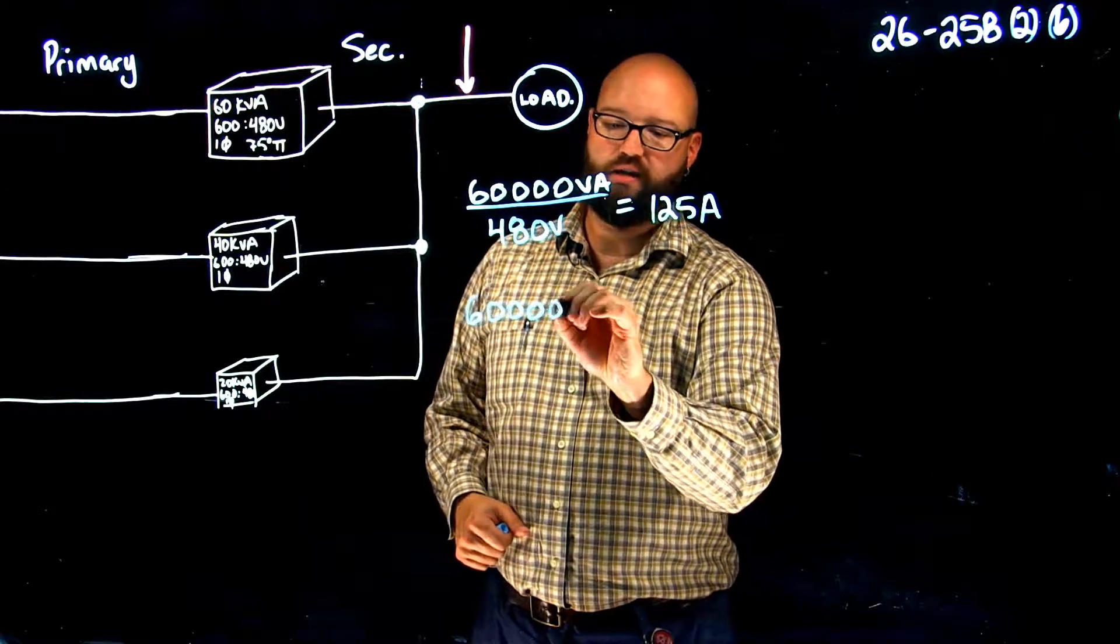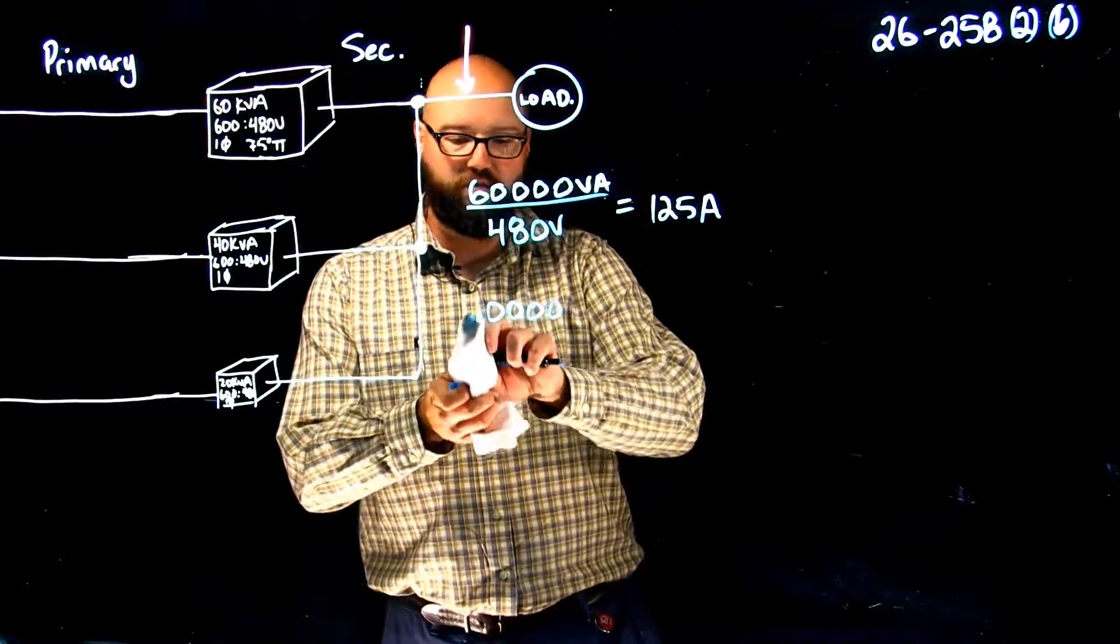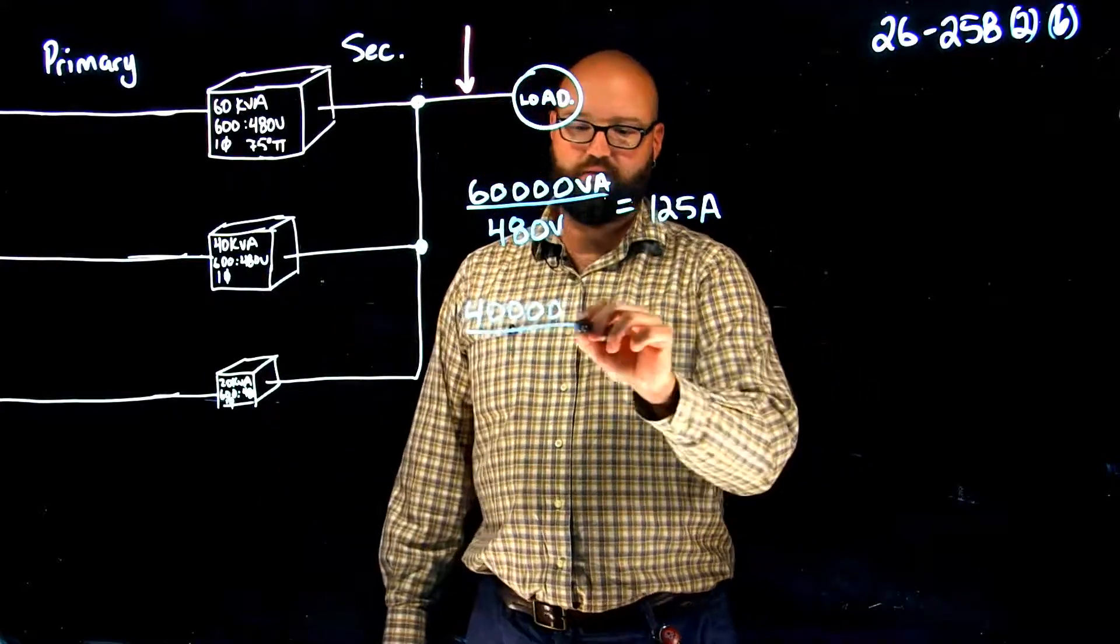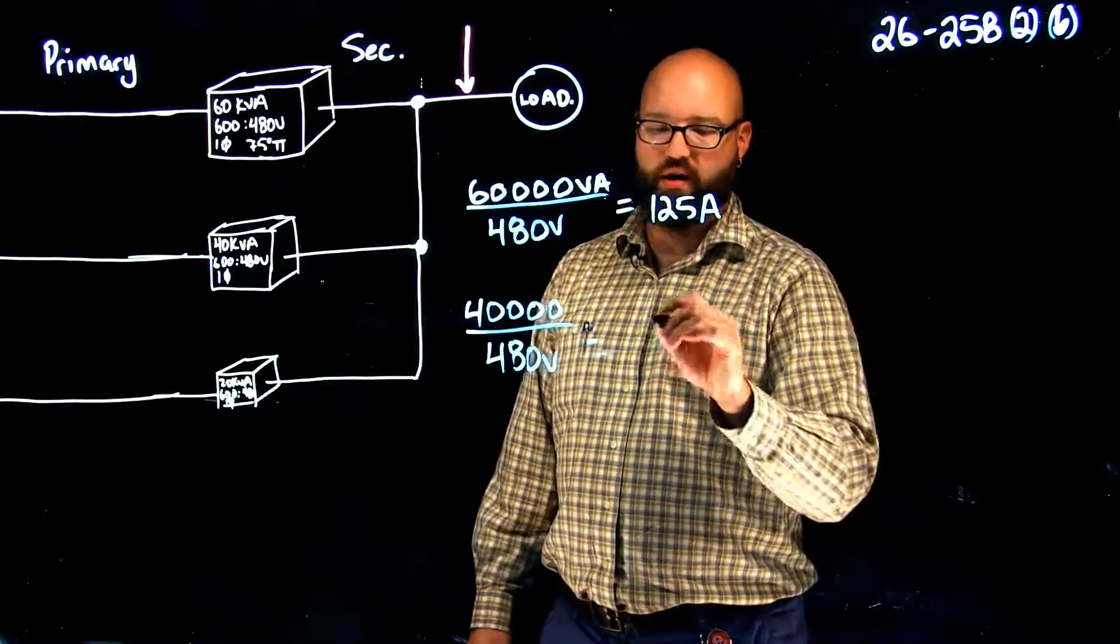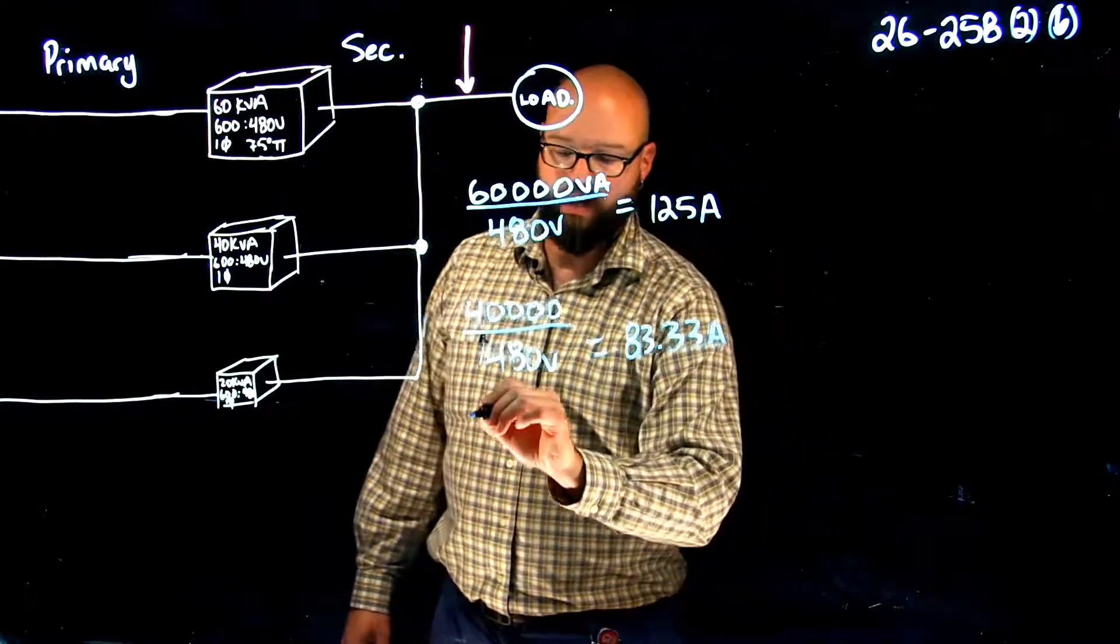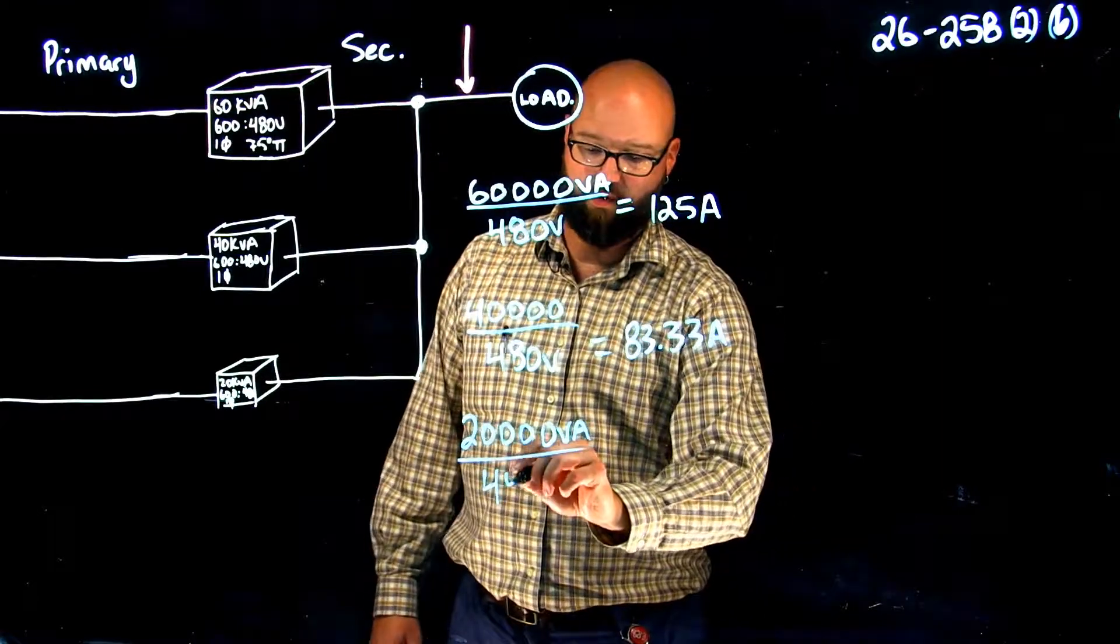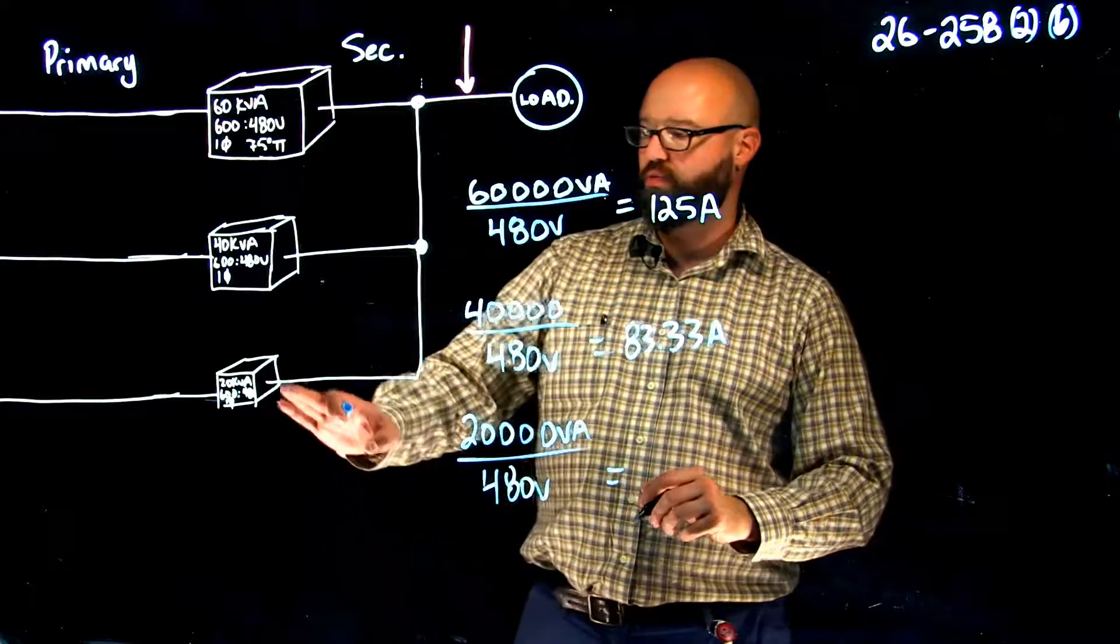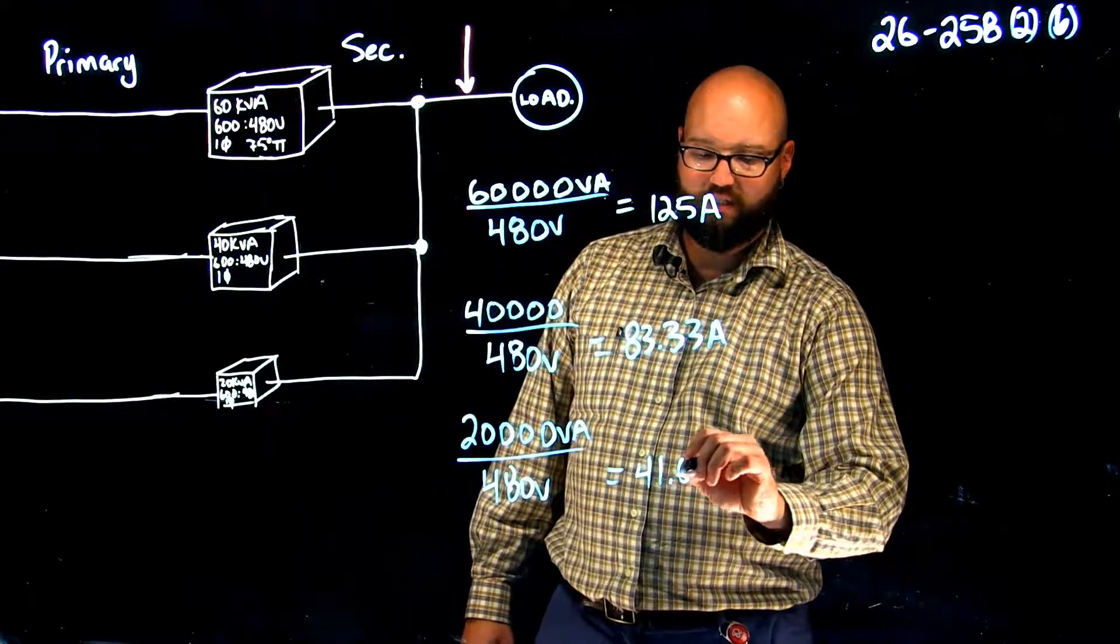We're going to look at our second, now we're dealing with our 40,000 VA transformer divided by our 480 volts gives us a secondary rated current of 83.33 amps, and our 20 kVA divided by 480 volts gives us a current rating on this 20 kVA transformer of 41.67 amps.